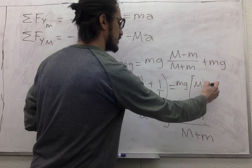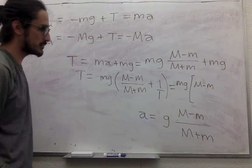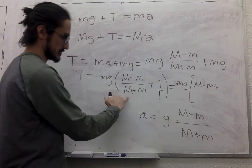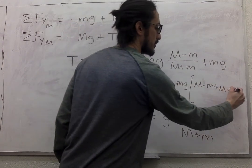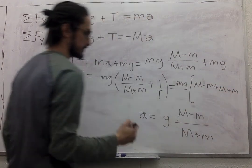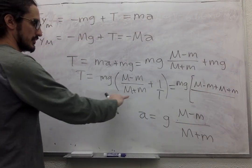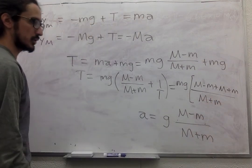M, capital M minus small m, plus capital M, plus small m, all of that divided by capital M plus small m.